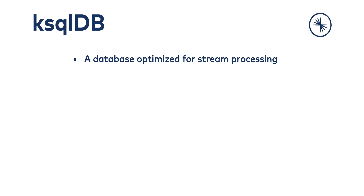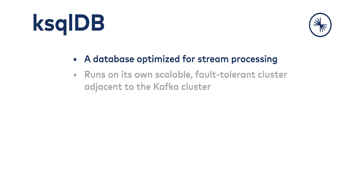We describe KSQL DB as the event streaming database for Apache Kafka. That's not a standard term yet, so I'm going to spend some time describing what I mean. It really is a highly specialized kind of database that's optimized for stream processing applications. It runs on a cluster of its own nodes — it's this thing outside the Kafka cluster. You deploy the KSQL DB process to a server or a cluster of servers that look like clients to those Kafka brokers.